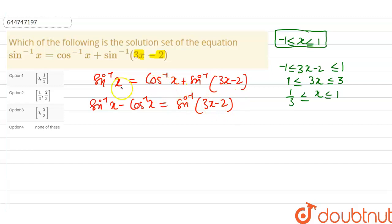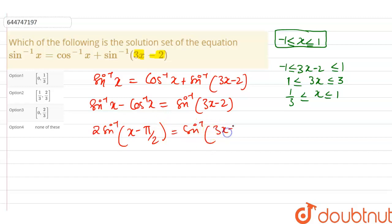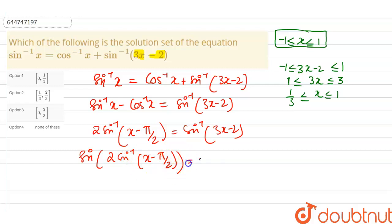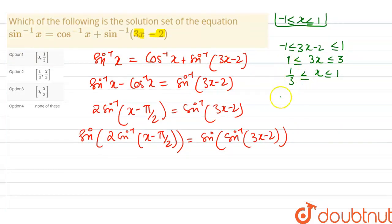We know the identity: sin⁻¹x minus cos⁻¹x equals 2·sin⁻¹x minus π/2. Substituting, we get 2·sin⁻¹x minus π/2 equals sin⁻¹(3x - 2). Taking sin on both sides: sin(2·sin⁻¹x - π/2) = sin(sin⁻¹(3x - 2)). Using the concept that sin(sin⁻¹θ) = θ, the right side simplifies to 3x - 2.